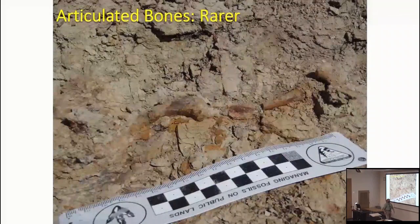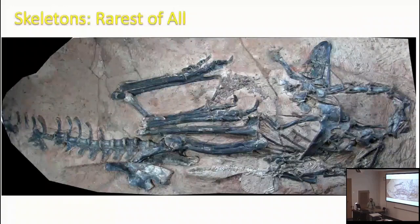Articulated bones — bones still in the position they were in life, sort of stuck together — are rarer than isolated bones. Here are bits of a limb, an arm, of a small crocodile, about 10 meters from that other specimen I just showed you. So even at the same spot, you can have different levels of articulation. And complete or nearly complete skeletons — whole strings of articulated bones together — are by far the rarest of all. They're the most special.